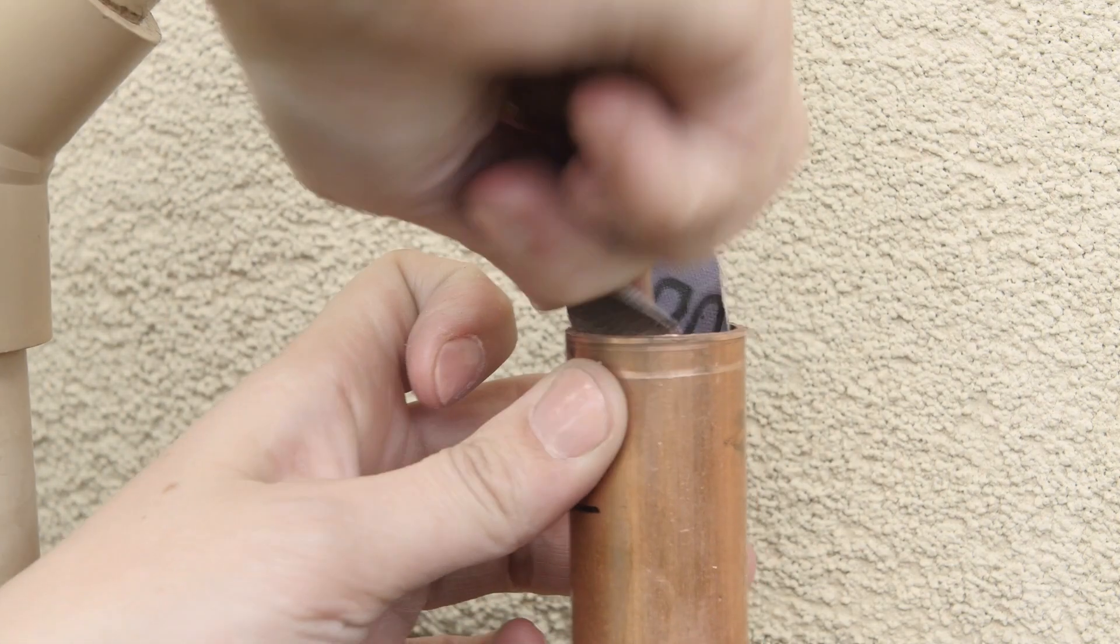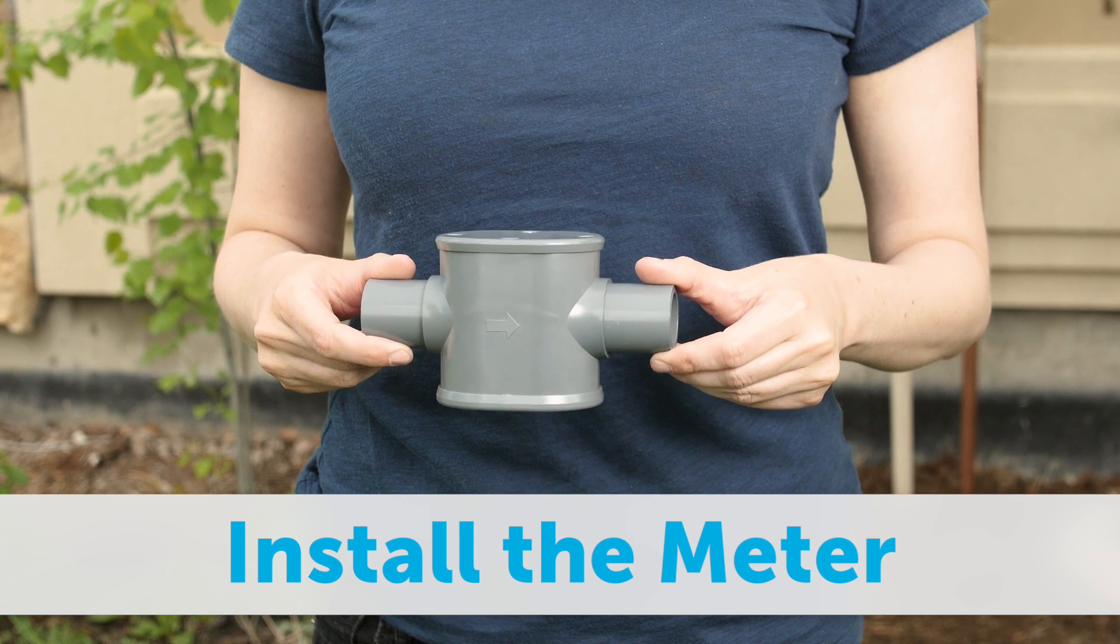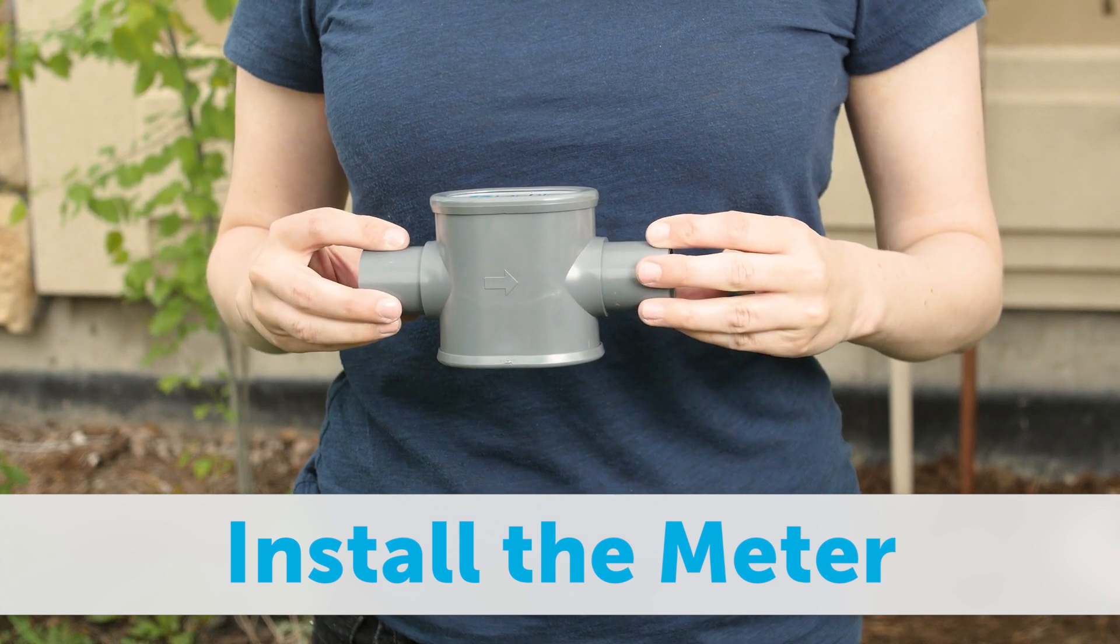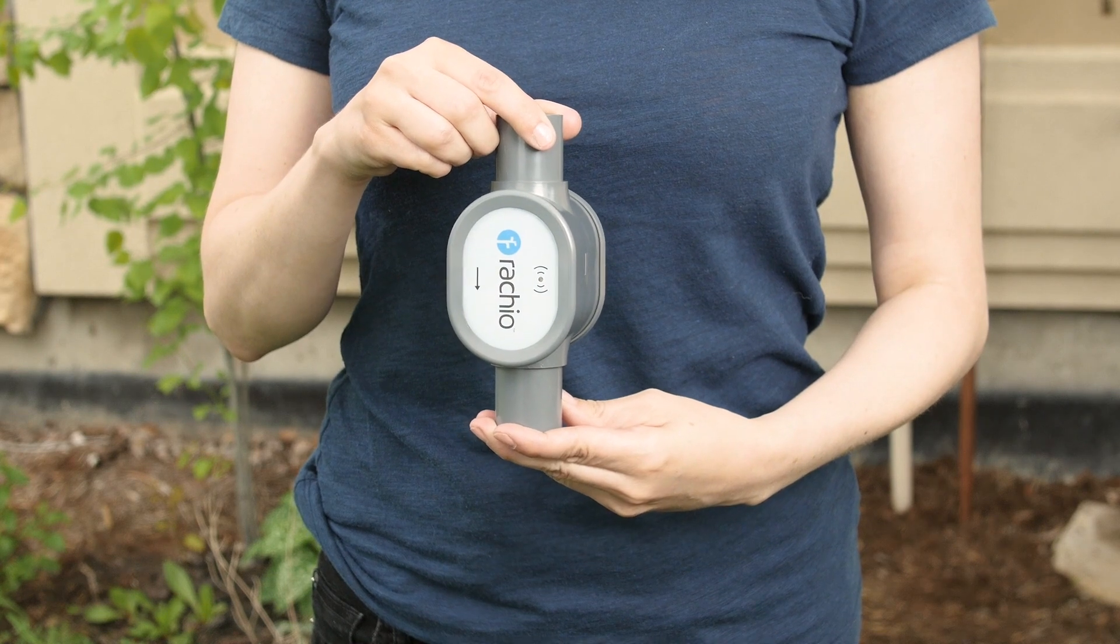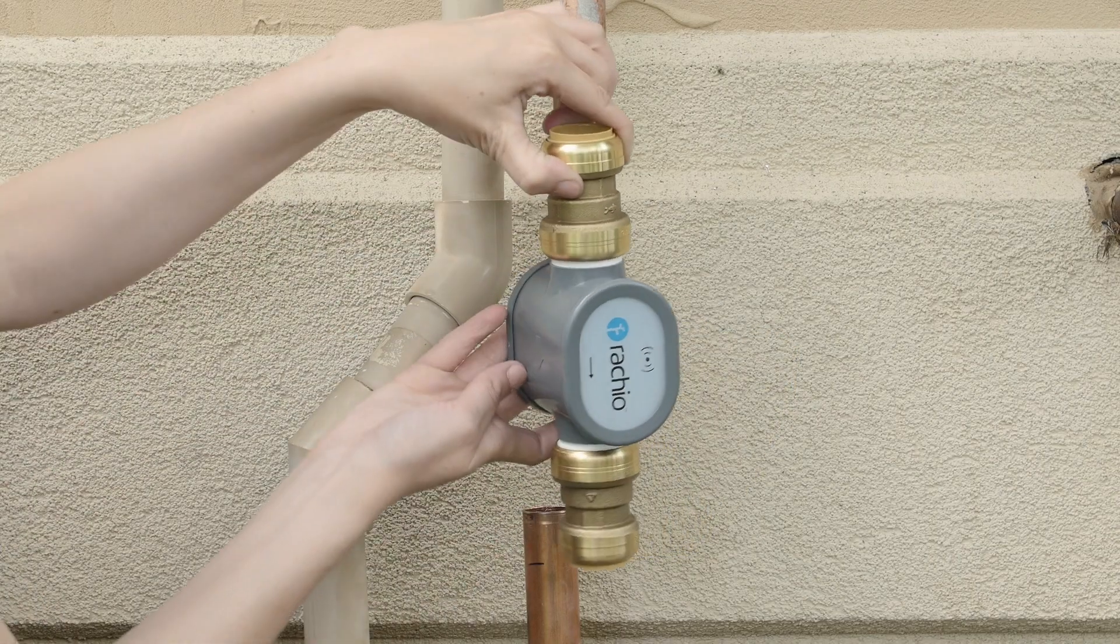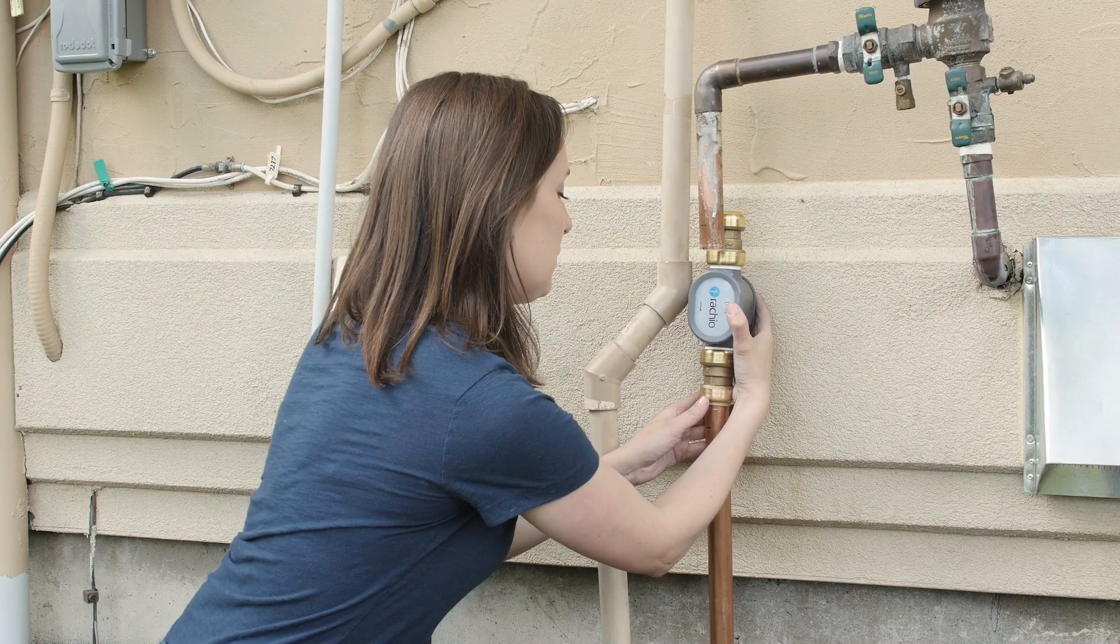Take your time. There are arrows embossed on the top and bottom of the meter, as well as printed on the faceplate. The arrow indicates the direction of water flow through the flow meter. It should point from the backflow preventer toward the valve box. The arrow will usually point down.